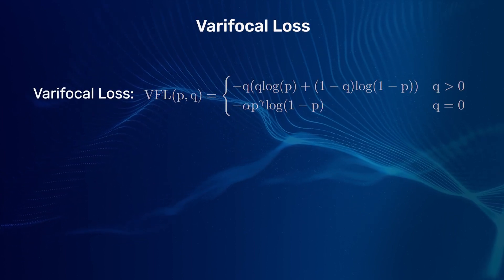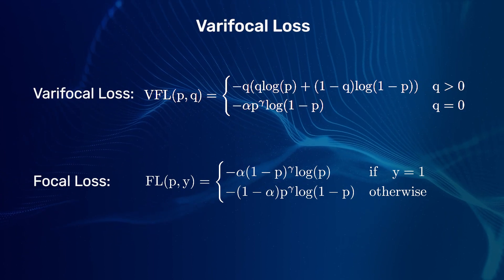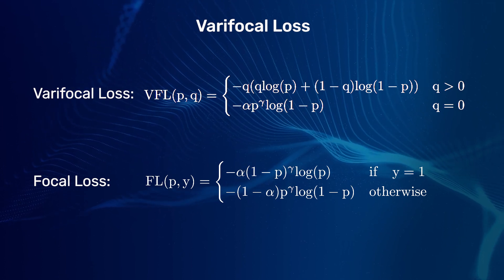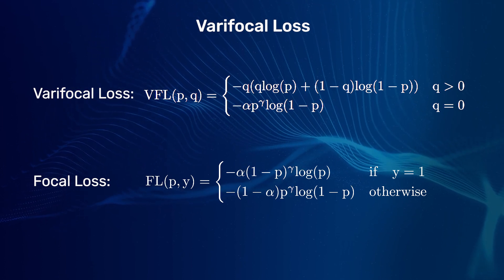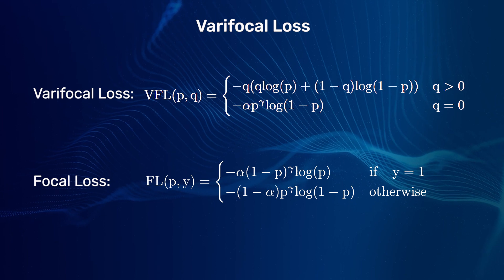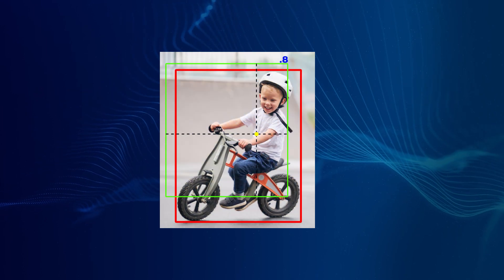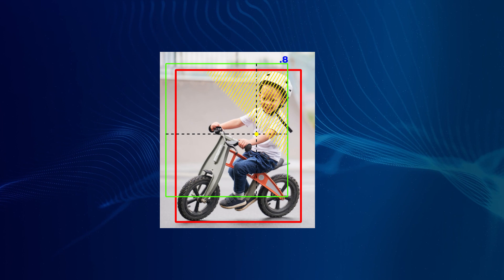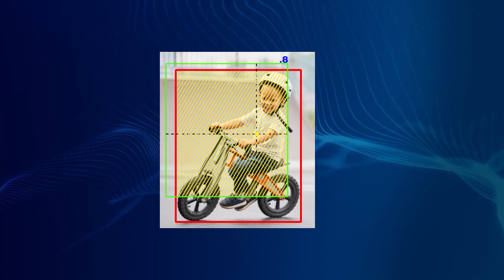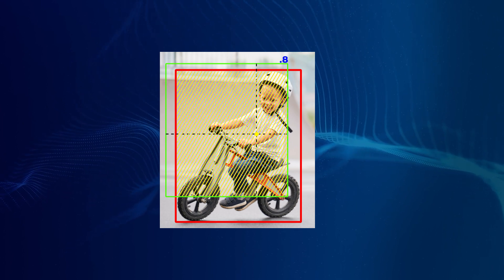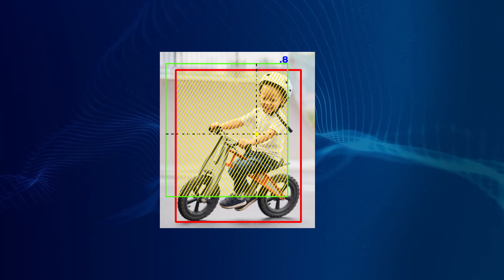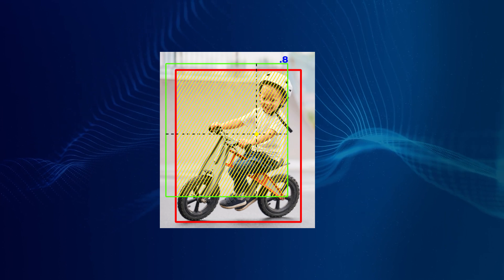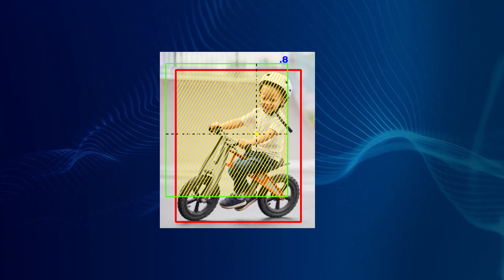Varifocal loss is derived from focal loss. Apart from weighing easy and hard examples separately, it also treats negative and positive samples at different degrees of importance. When the overlap between the predicted bounding box and the ground truth is high — say 0.8 — then varifocal loss gives more importance to the foreground point, whereas it tries to suppress the background classes.